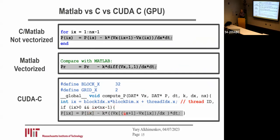The thing happening at Ix plus one depends on what happens in Ix. So in a standard loop we can see how to do that, but doing it all simultaneously is not obvious.